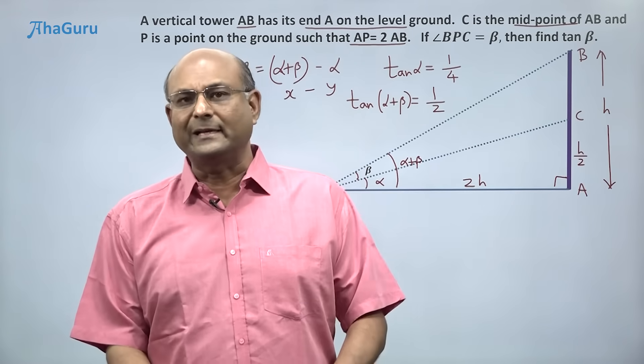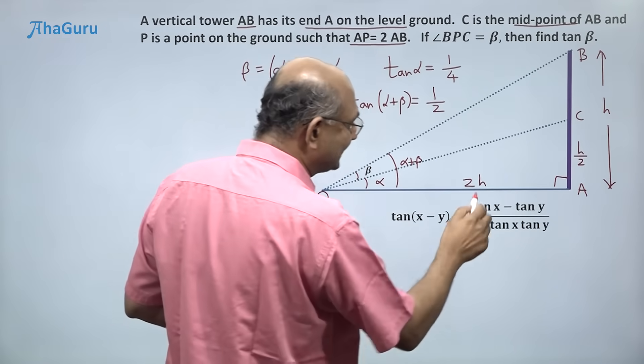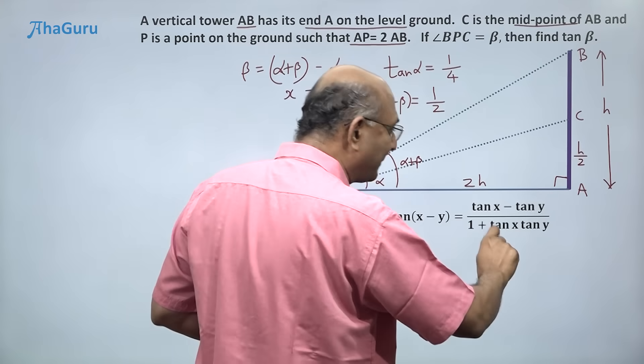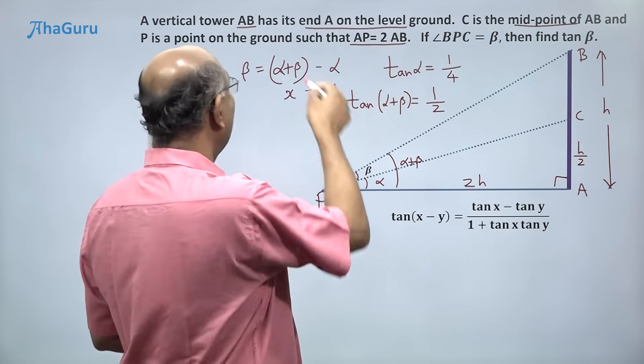Do you know a formula to find tan of (x - y)? Yes, that is one of the basic formulas. Tan of (x - y) is (tan x - tan y) / (1 + tan x tan y). That's all. Now what is x? Alpha plus beta. What is y? Alpha.